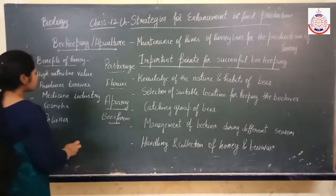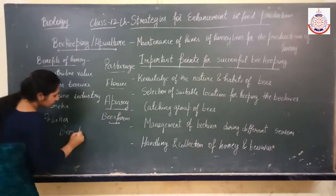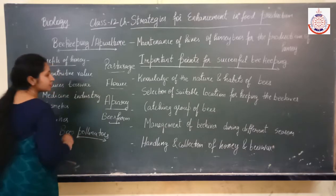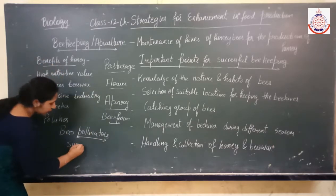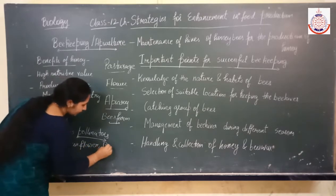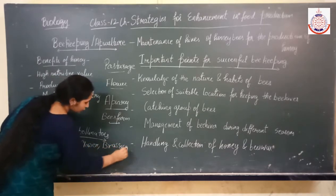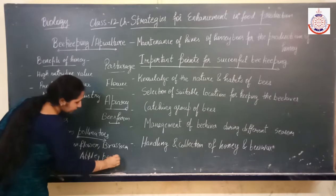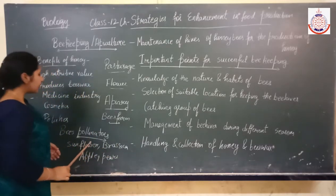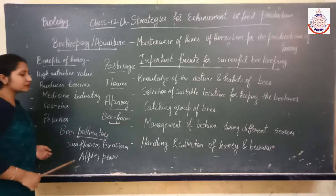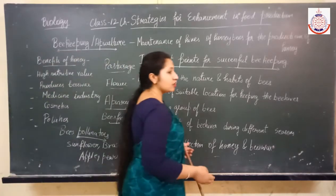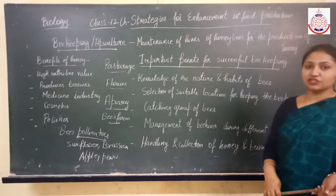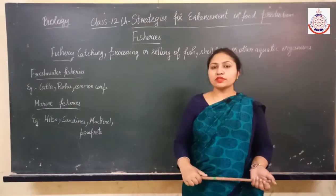Honeybees act as pollinators for several species like sunflower, brassica, apple, and pears. They help in pollination and in this manner they help in increasing the yield also. This is all about apiculture.